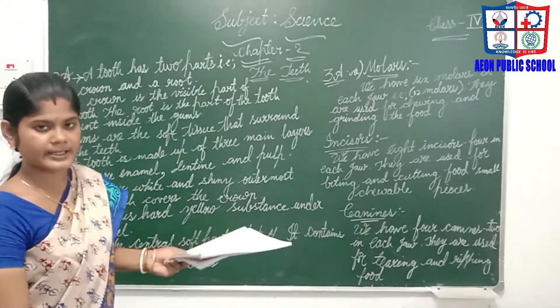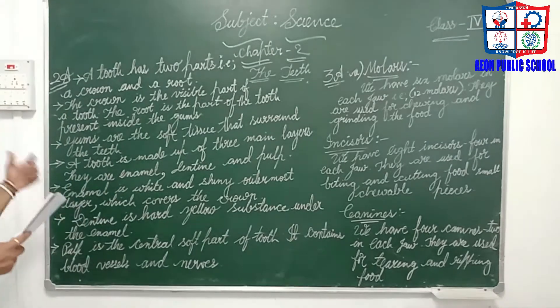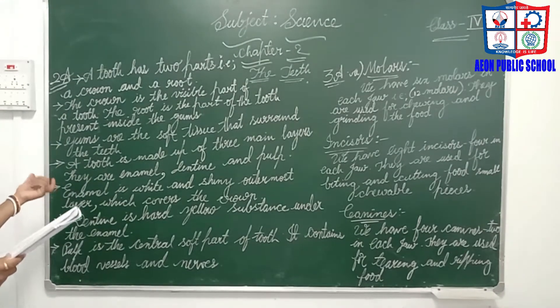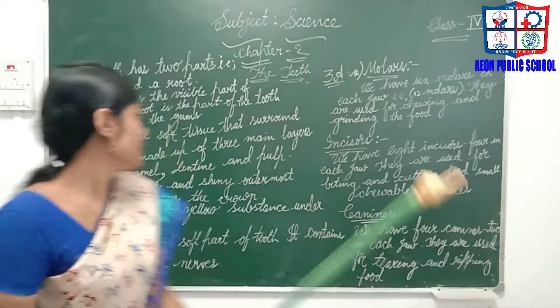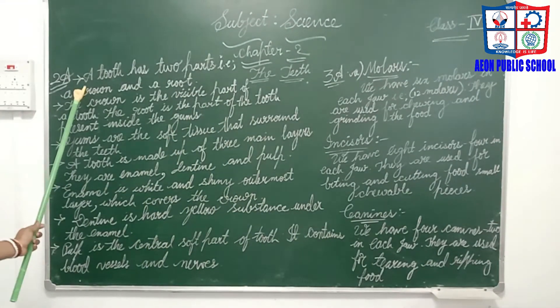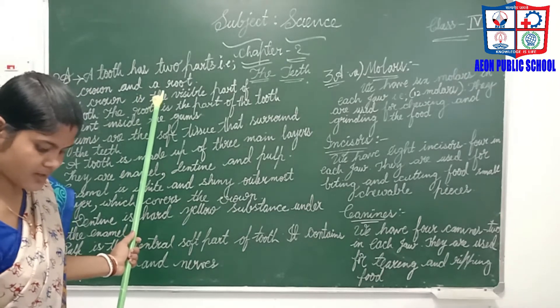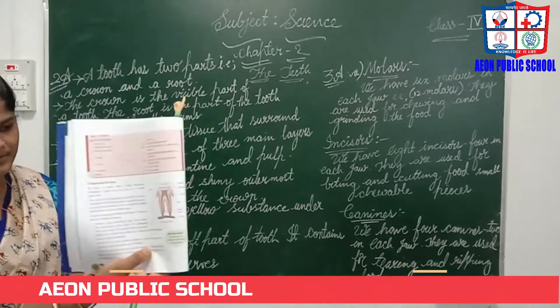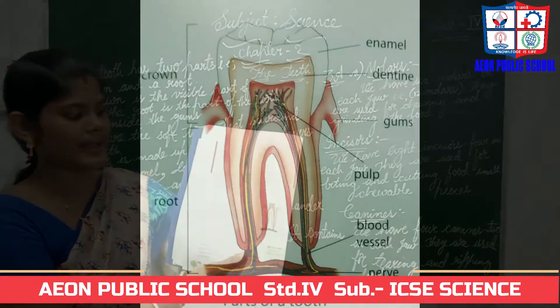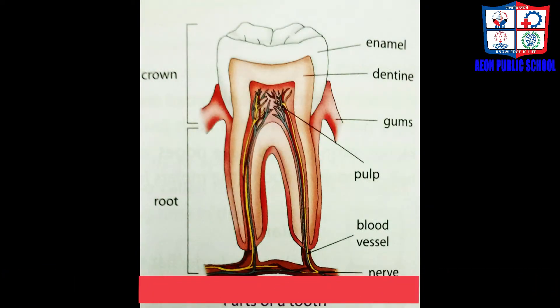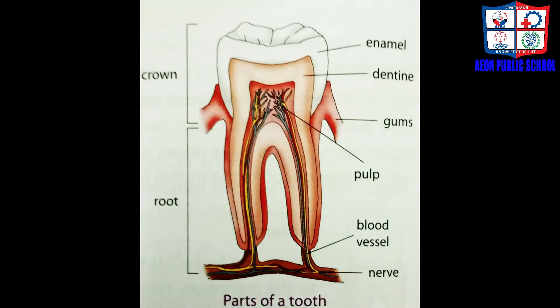We have seen the diagram. Now we have to describe a tooth. See the diagram once. Here, what are the parts? Crown, root, enamel, dentine, gum, pulp — that is the center. These are the parts we have to explain.